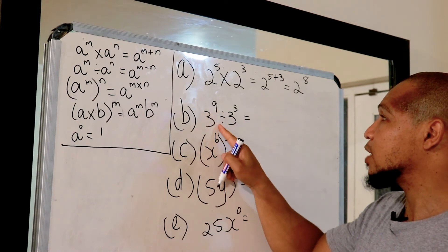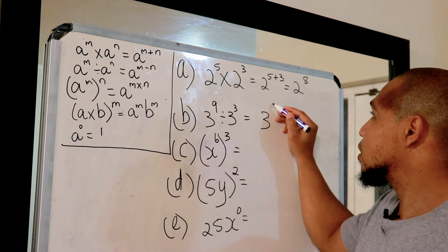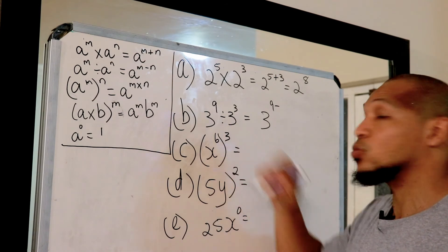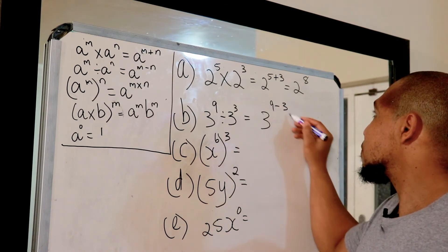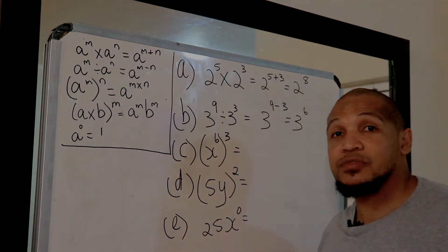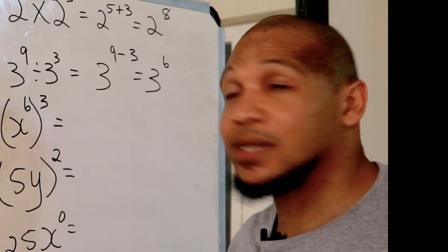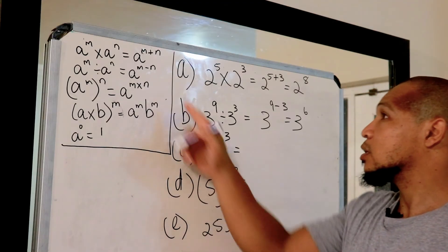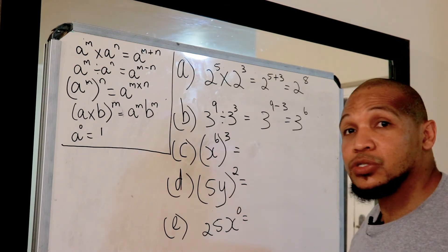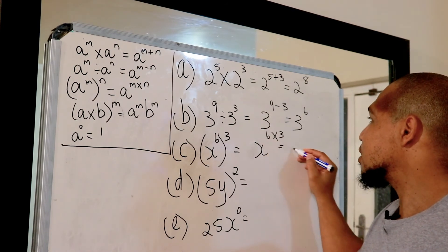Three to the power of nine divided by three to the power of three: rule number two, which says we keep the base and subtract the exponents because we divide. The answer is three to the power of six. Next, x to the power of six in brackets with three on the outside: that's rule number three, and the answer is x to the power of eighteen — six multiplied by three.